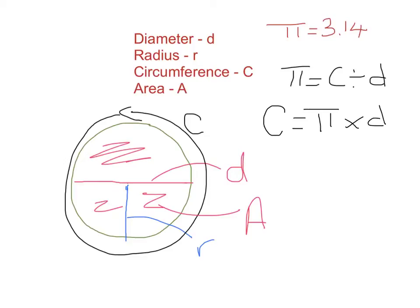When solving for diameter, the diameter equals the radius times 2. If you look at your radius — this line here — you know that if you multiply the radius twice, adding the radius on the other side as well, it gives you the same length all the way across the circle. That's why diameter is simply the radius multiplied by 2, giving you the line that goes straight across.